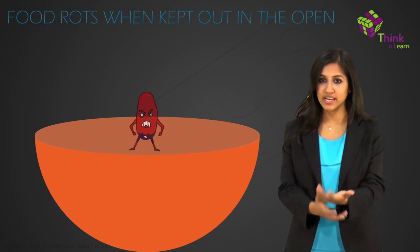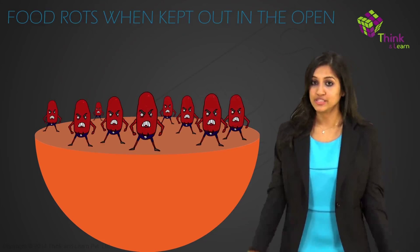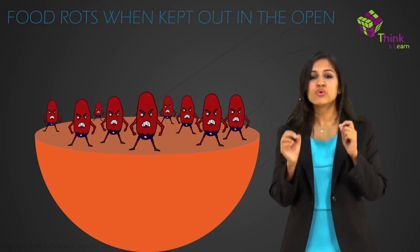So E. coli is a good bacteria gone bad because it was just in the wrong place. So if you leave food out in the open, it will begin to rot. This is because bacteria likes tasty food too, like you, and will eat the food that you have left out and make lots more bacteria in the process.